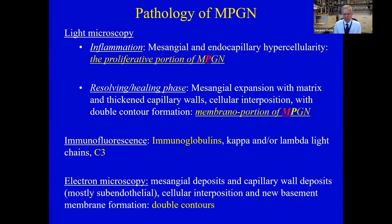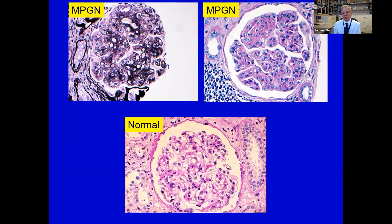Here is what MPGN looks like on light microscopy — for comparison, here's a normal glomerulus, and this is MPGN on light microscopy. You have mesangial expansion that is somewhat nodular, with hypercellularity. Looking at the capillary walls, you can see large double contours, with cellular material within them — sometimes called mesangial interposition. The overall appearance has a lobular accentuation, well seen on PAS sections. On silver stains, double contouring is even more clearly visible. This is the MPGN pattern — until recently called membranoproliferative glomerulonephritis as a disease entity in itself.